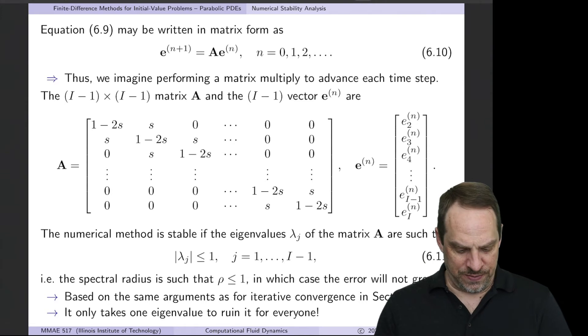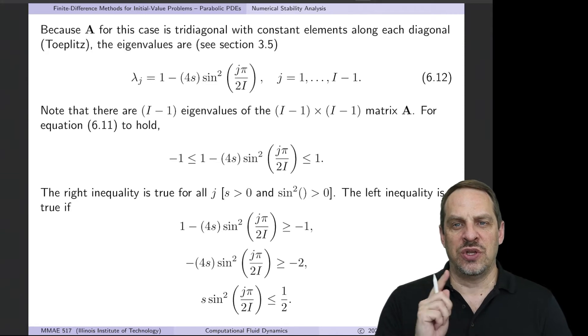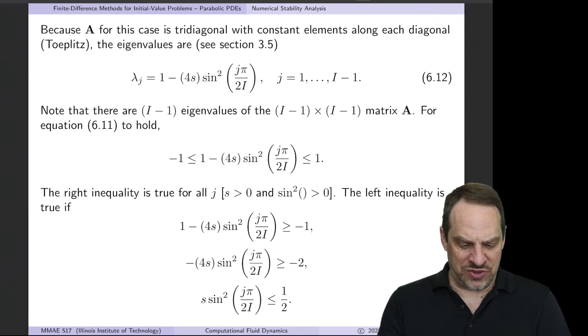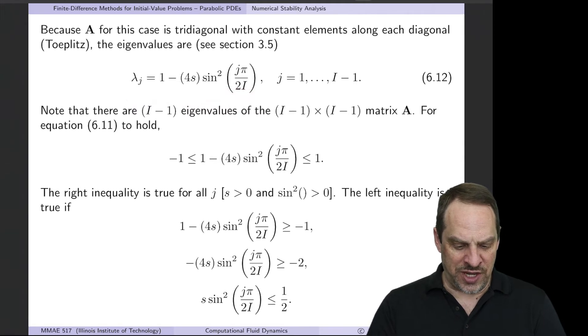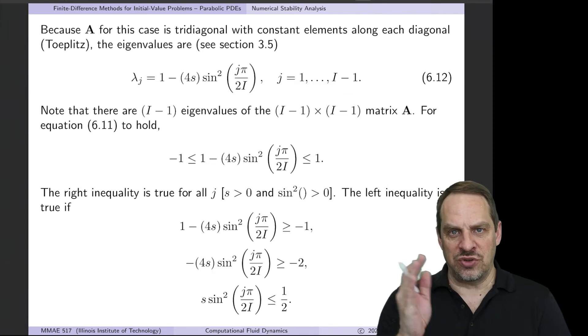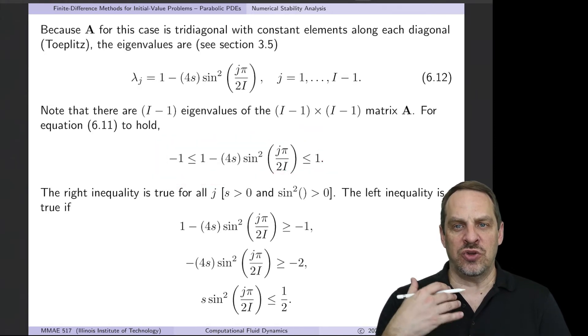So now we know, because this is a tridiagonal matrix that happens to be Toeplitz, we already know what the eigenvalues are. We had these from section 3.5 way back. So the lambdas are 1 minus 4s times sine squared of j pi over 2I. You'll notice I'm using j here to go from 1 to capital I minus 1, because we're shifting due to the boundary conditions. So if the magnitudes of the lambdas all have to be less than or equal to 1, that's the same as saying they have to be between minus 1 and 1. So we have these inequalities that we have to satisfy in order for our numerical method to be numerically stable.